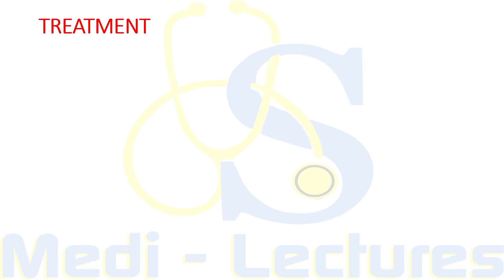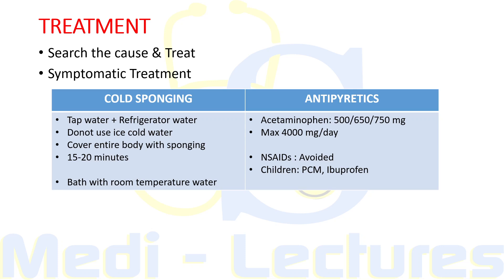For treatment, the first and most important thing is to search for the cause and treat the underlying condition. For symptomatic treatment we can do cold sponging and use antipyretics. Cold sponging should be done with water made by mixing tap water with refrigerator water — do not use ice-cold water. Cover the entire body, not just forehead, palms, and soles. Sponging must be done for 15–20 minutes. If the patient is ambulatory and fine, bathing with room temperature water is also allowed. Paracetamol or acetaminophen should be used in each case, and NSAIDs are avoided as much as possible. Paracetamol is available in 500, 650, and 750 mg tablets; if the patient cannot take it orally, IM or IV preparation can be used. A common IV preparation is 1 gram in 100 ml infusion.